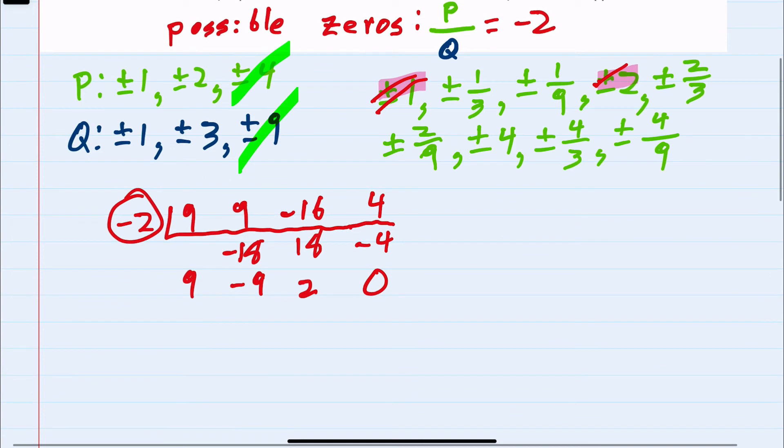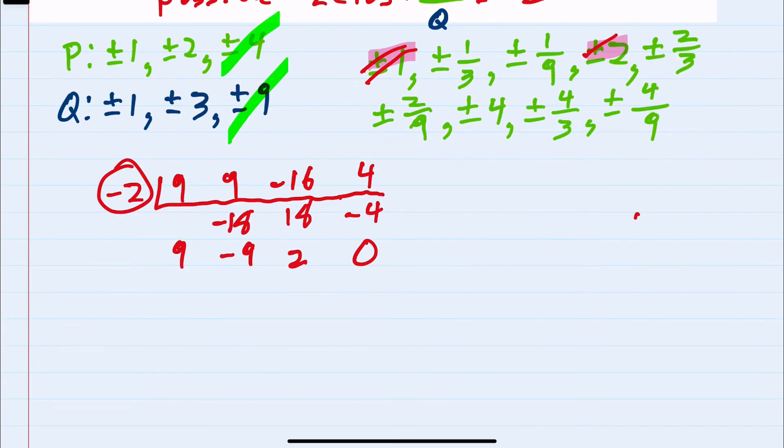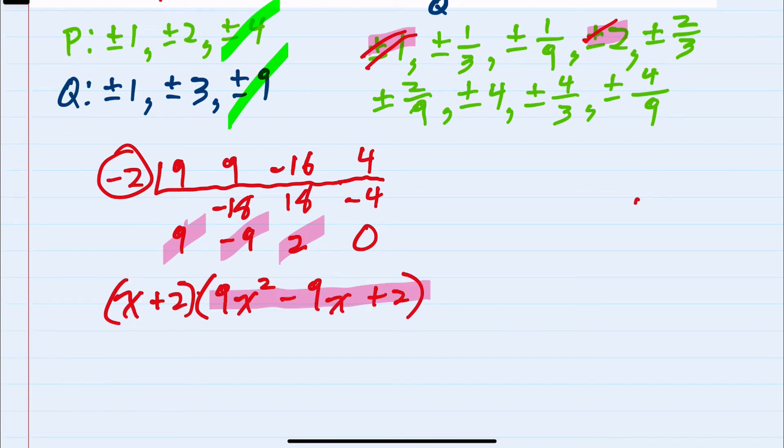And I can rewrite this function now. If negative 2 is a zero, then I can write this as x plus 2 times—and these are my new coefficients—so 9x squared minus 9x plus 2.